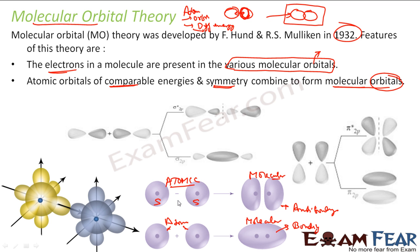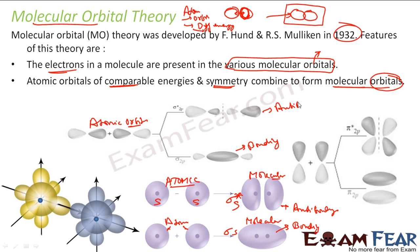Since it is a head-on overlap, it is a sigma s orbital, and this is a sigma s-star anti-bonding orbital. Similarly, for p orbitals you also have head-on overlap forming sigma p bonding and sigma p-star anti-bonding molecular orbitals. The law of conservation of orbitals is followed — atomic orbitals of comparable energy and symmetry form molecular orbitals, and then you fill electrons into those molecular orbitals.